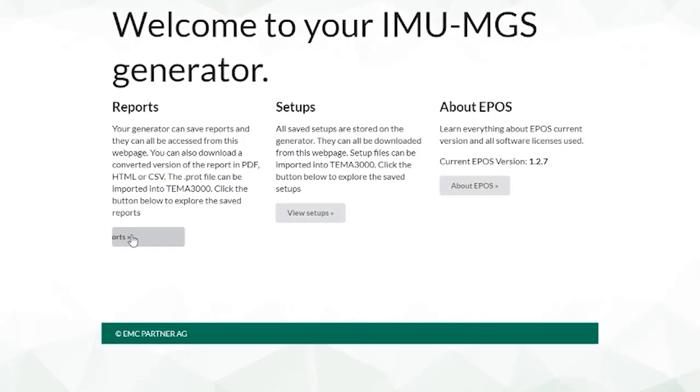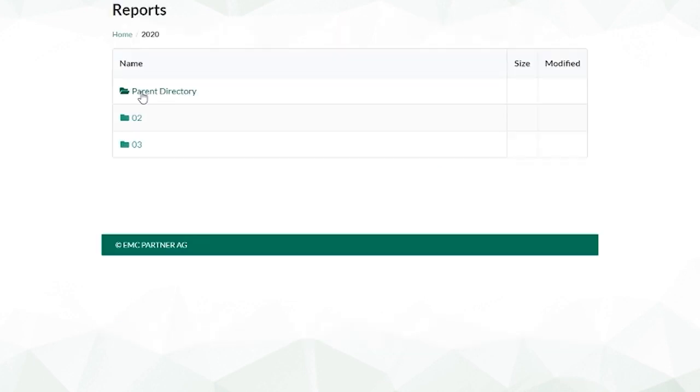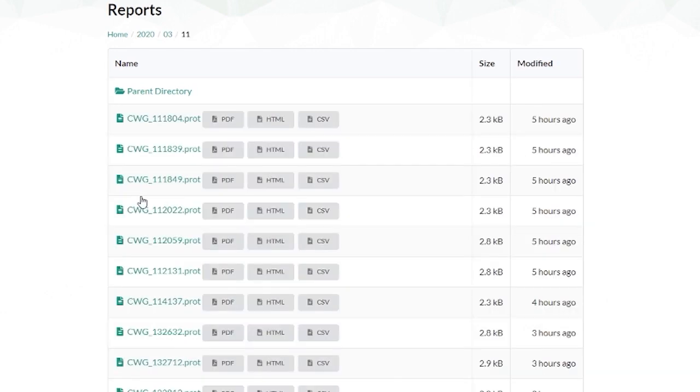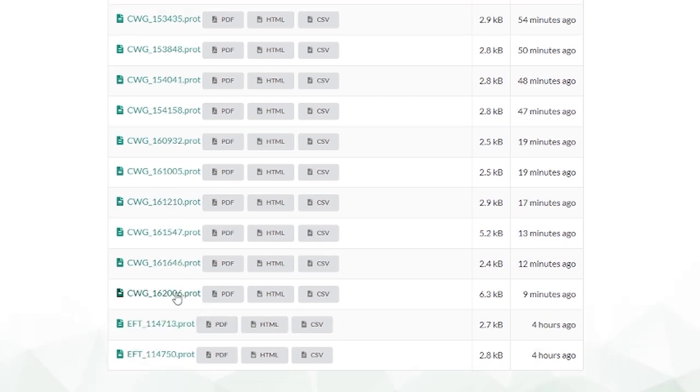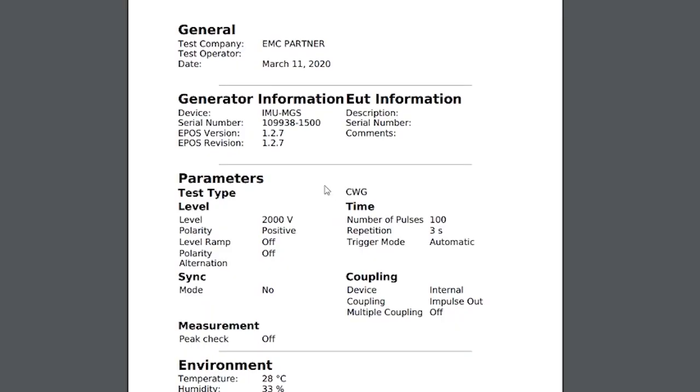The web server can be used to access the test reports saved inside the generator and also the test setups saved inside the generator. The test reports can be opened in the web server. We see the file structure inside the generator. We select the test report we want to open in whichever format, PDF, HTML or CSV.